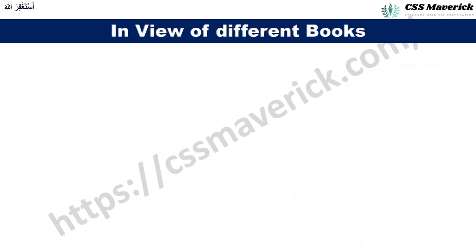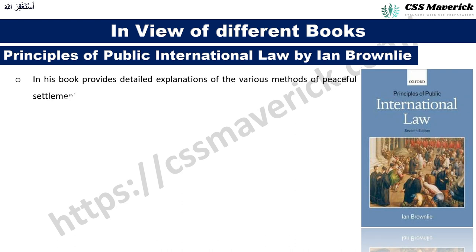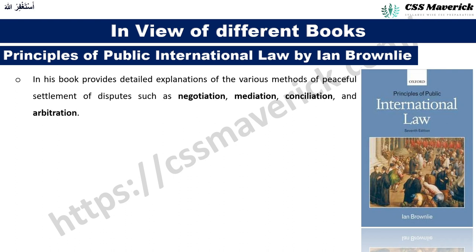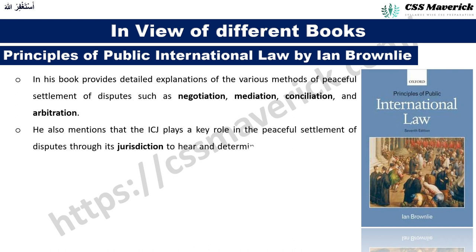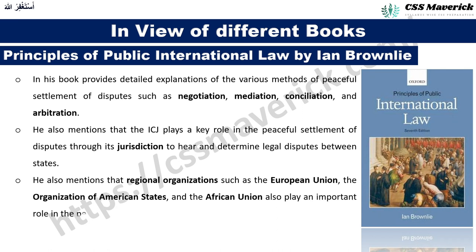Ian Brownlie in his book 'Principles of Public International Law' provides detailed explanations of various methods of peaceful settlement such as negotiation, mediation, conciliation, and arbitration. He also mentions that the International Court of Justice plays a key role through its jurisdiction to hear and determine legal disputes between states, and that regional organizations such as the European Union, the Organization of American States, and the African Union also play an important role in the peaceful settlement of disputes.